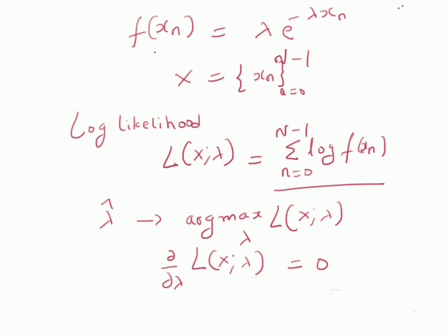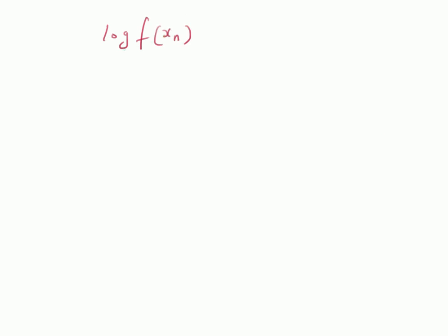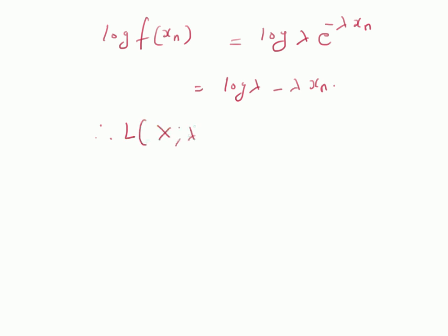By solving this equation we can estimate the unknown value lambda. First we derive the expression for the log-likelihood function. The logarithm of f(x_n) equals the logarithm of lambda times e to the power of minus lambda x_n, which equals log(lambda) minus lambda x_n. Therefore the log-likelihood function is: N times log(lambda) minus lambda times the summation from n=0 to n minus 1 of x_n.